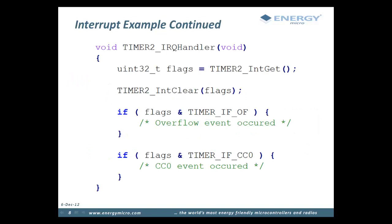Here is an example of an interrupt handler for the interrupts that we enabled on the previous slide. In the startup code provided by Energy Micro, default implementations for interrupt handlers are defined. These are weakly linked, so when a developer creates a new function, it will override the default implementations. The naming convention is exemplified on this slide: first is the name of the IRQ signal, followed by an underscore and the postfix IRQHandler. Interrupt handlers do not return any value nor do they take any parameters. In the interrupt handler, we first retrieve and store the list of interrupt flags and then clear those flags in the peripheral registers. We can then check the local copy of the interrupt flags to see which interrupt occurred.